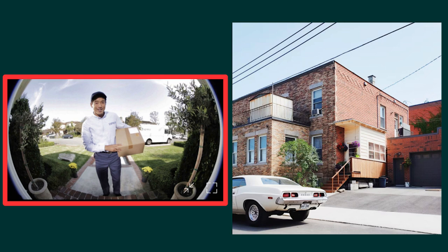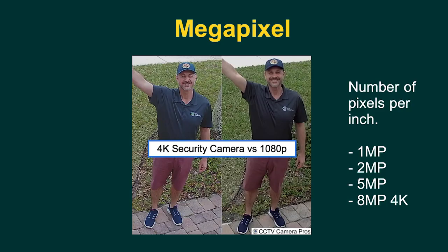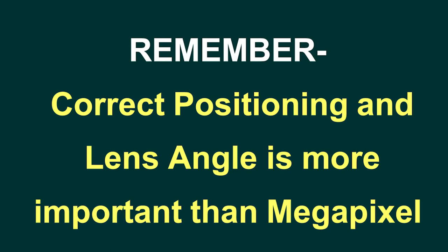We haven't touched on megapixels yet — you'll be seeing numbers like 1MP, 2MP, 8MP, 4K, 8K going up and up. While it is important and it's great to see technology has improved, one very important thing to remember is that correct positioning and having the right lens angle is more important than megapixels. I'm not saying go for lower megapixels — do whatever is in your budget — but the megapixel is not as important. Before spending an extra 30 to 40% on super features you can't afford, hold on.